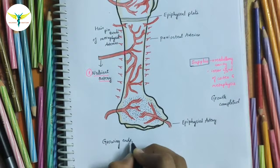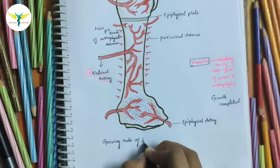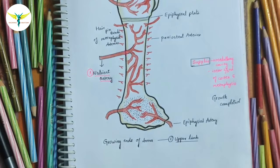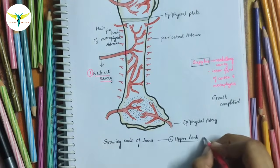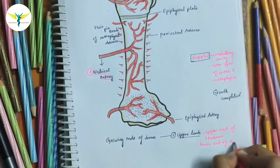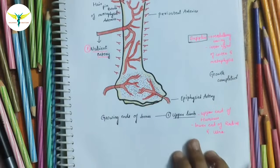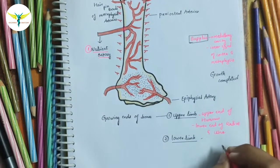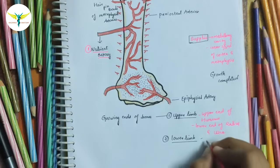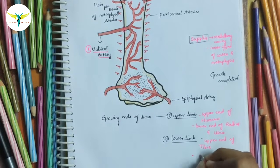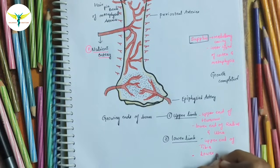Coming to the growing ends of bones — in the upper limb, the growing ends are the upper end of the humerus and the lower end of the radius and ulna. In the lower limb, the growing ends are the upper end of the tibia and the lower end of the femur.